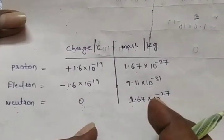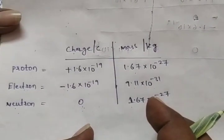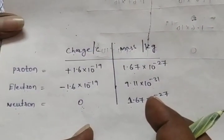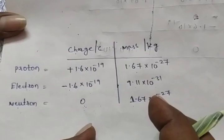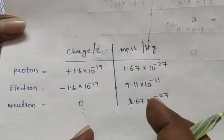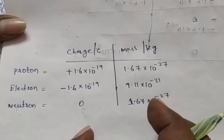This is about the charges and masses of proton, electron, and neutron.